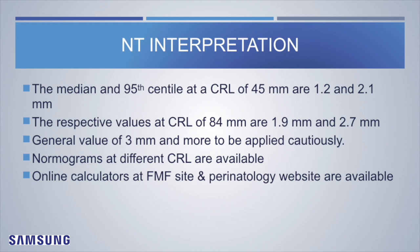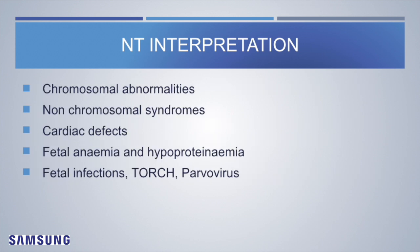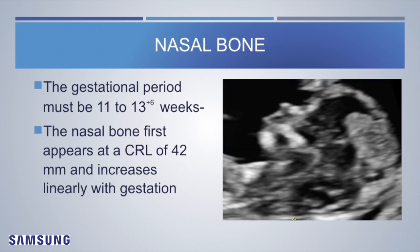For NT interpretation: the median and 95th percentile at CRL of 45 mm are 1.2 and 2.1 millimeters; at CRL of 84 mm they are 1.9 and 2.7 millimeters. The general value of 3 mm or more should be applied cautiously — at a CRL of 48 mm, a value of 2.5 mm may already be at or above the 95th percentile. Use normograms or online calculators at the FMF and perinatology websites for the exact percentile for that CRL. NT is elevated in chromosomal abnormalities, non-chromosomal syndromes, cardiac defects, fetal anemia, hypoproteinemia, and fetal infections.